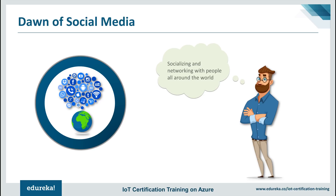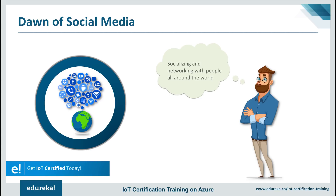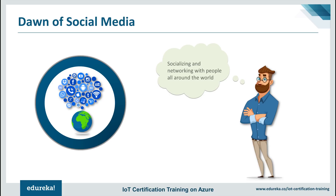Sites like MySpace and LinkedIn gained prominence in the early 2000s. YouTube came out in 2005, creating an entirely new way for people to communicate and share with each other across great distances. By 2006, Facebook and Twitter both became available to users throughout the world. Today there is a tremendous variety of social networking sites, and many of them can be linked to allow cross-posting, creating an environment where users can reach the maximum number of people without sacrificing the intimacy of person-to-person communication.